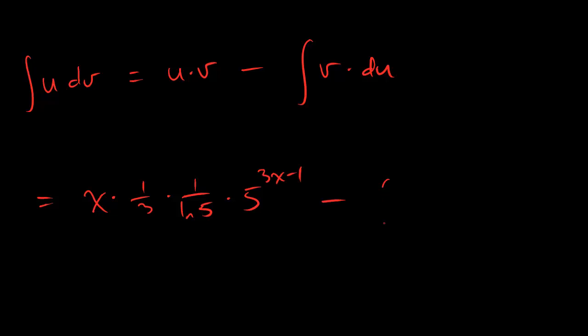And now we have the integral of v du. V is just, oh dear, we have all this crap, wait, no, I gotta erase, I gotta do it. Okay, 1 third, 1 over ln 5, 5 to the 3x minus 1, that's our v, and our du is nice and simple, dx, no big deal.